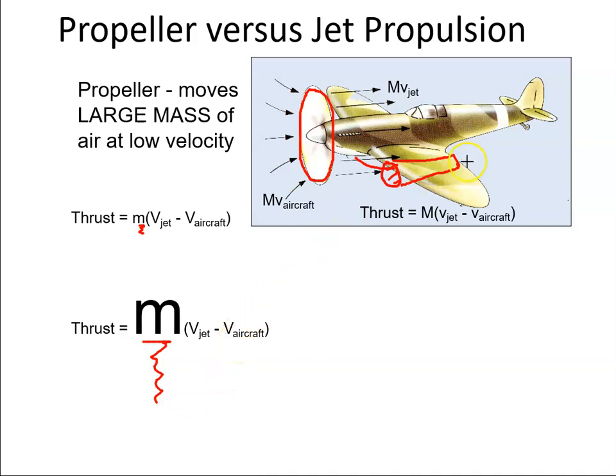Now with the jet engine, when the exhaust gases come out, they're coming out very fast, so we get a large Vjet. But with the prop, they'll be a lot slower, so we get a small Vjet.